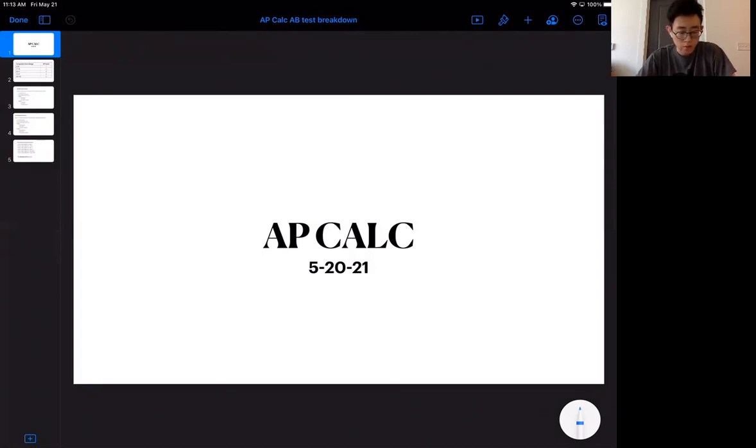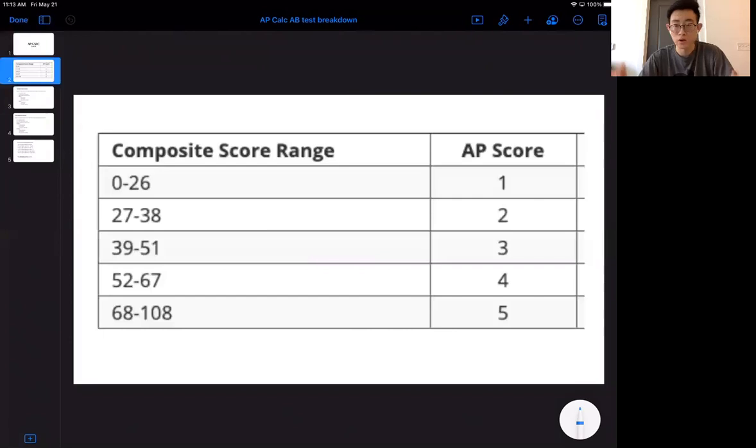Pretty much all the information that I have on the slide is from the internet. I just Google searched the Calc exam score breakdown, and I want to give you guys the categories in which what type of scores you need to get in order to get an AP score of 4 or 5.